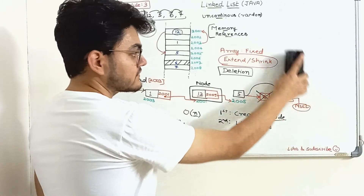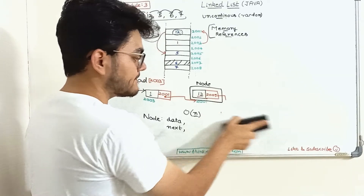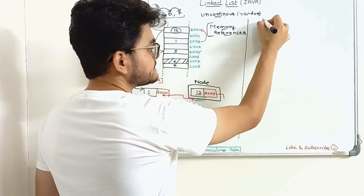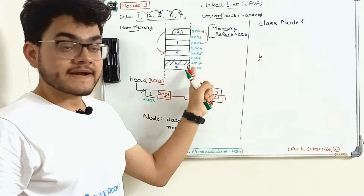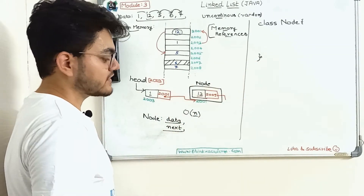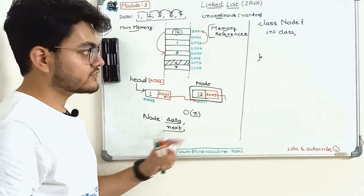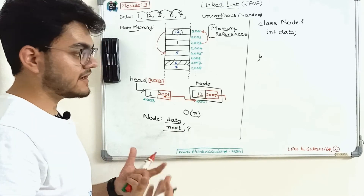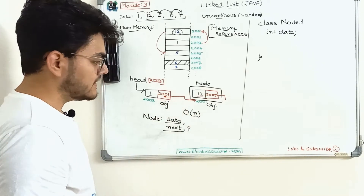In Java, since it is an object-oriented programming language, we can use the concept of objects for allocation and referencing. To allocate data, the idea is simple: I will create a class called Node. If I create a class Node, it will not get allocated in memory — it will only get allocated when I create an object of this class. Each node object will have integer data and a memory reference to the next object. The question is: how can we create a memory reference? We can treat each node as an object and reference it.